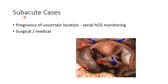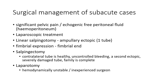Now let us see about management of sub-acute cases of ectopic pregnancy. There is something called pregnancy of uncertain location — in this case, serial HCG monitoring should be done. Sub-acute cases of ectopic pregnancy can be managed either surgically or medically. Surgical management is indicated when there is significant pelvic pain or when there is echogenic free peritoneal fluid, that is hemoperitoneum.